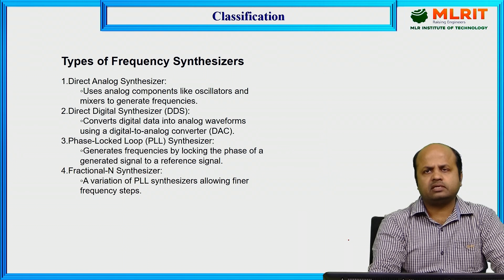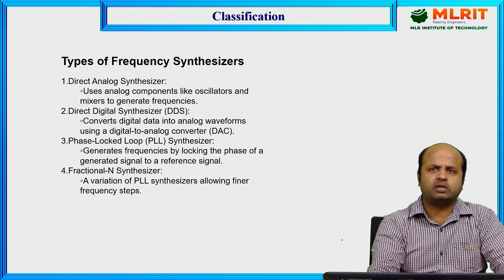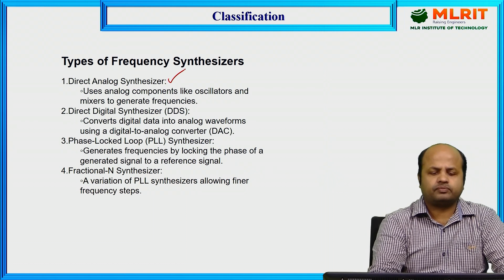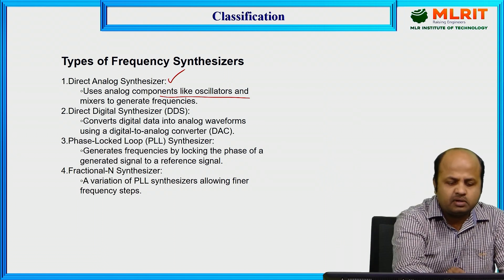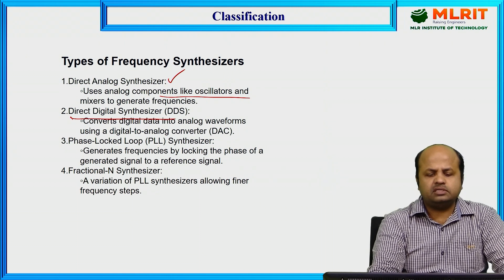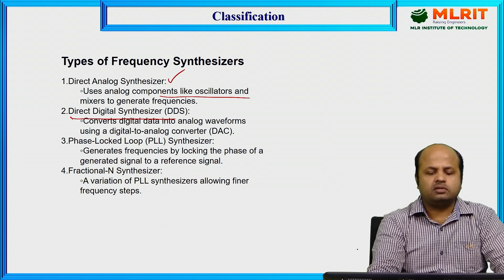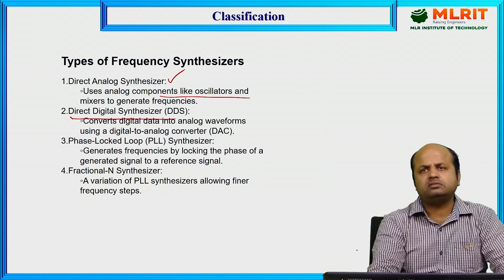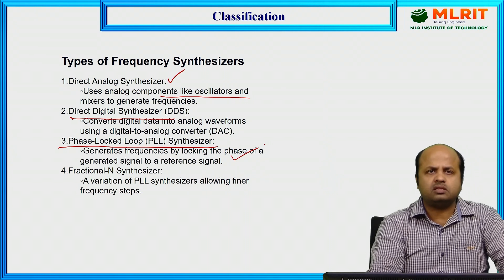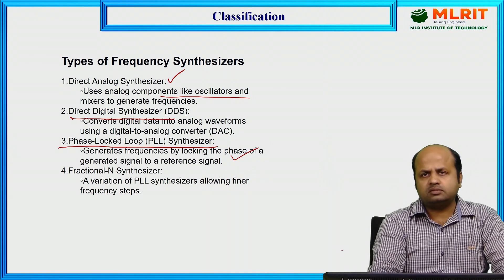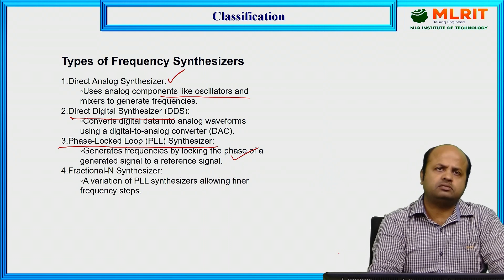Let us classify frequency synthesizers under different categories. The first type is the direct analog synthesizer, which uses analog components like oscillators and mixers to generate frequencies. The second is the direct digital frequency synthesizer, which converts digital data into analog waveforms using a digital-to-analog converter. The third type is the phase locked loop (PLL) frequency synthesizer, which generates frequency by locking the phase of the generated signal to a reference signal, detecting the phase of the reference signal and generating frequency accordingly.